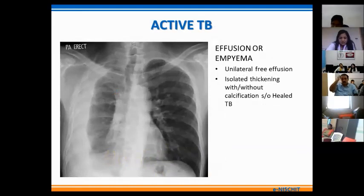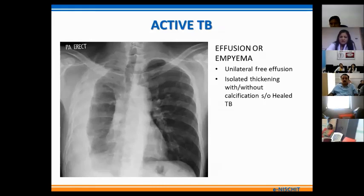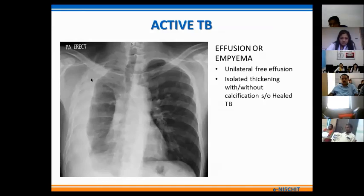This X-ray demonstrates a common finding of active TB — the presence of effusion or empyema. It could be a large effusion as in primary TB or a small loculated empyema as generally seen in the post-primary form. The pleural effusion can also present with pleural thickening, which may calcify in due course of time as a marker for healed TB. This X-ray shows effusion with some non-homogeneous opacities in the surrounding lung field.